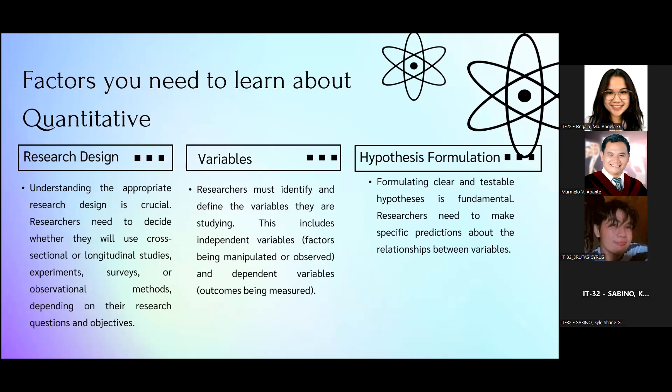Here are factors that you need to learn about quantitative research. The research design: understanding the appropriate research design is crucial. Researchers need to decide whether they will use cross-sectional or longitudinal studies, experiments, surveys, or observational methods, depending on the research questions and objectives.